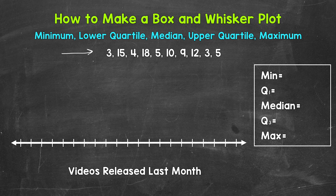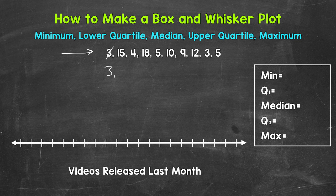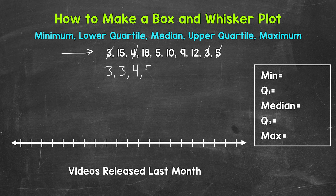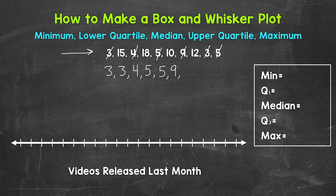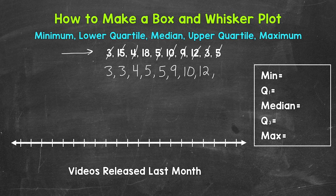Now the first thing that we need to do is order the data from least to greatest. So we will start with 3, so we have 3, and then another 3. Now I'm going to cross these out as we go through the numbers, that way we stay organized here. Then we have 4, 5, another 5, 9, 10, 12, 15, and 18.